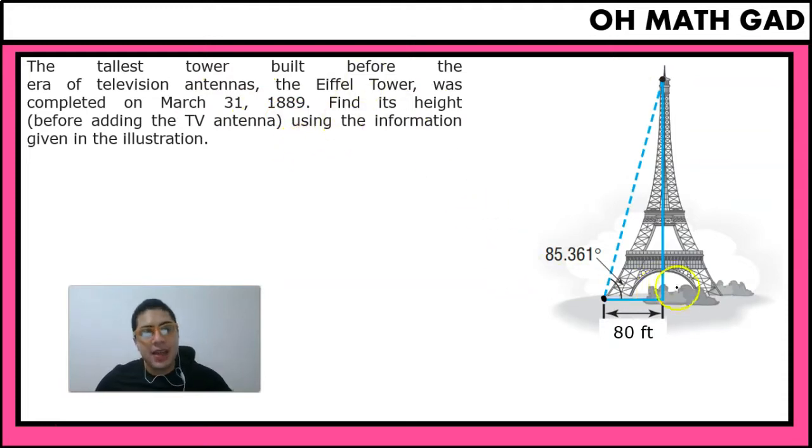Again guys, in this case we have a right triangle, so because of that we can use our trigonometric identities in order to solve this triangle. So we have a value of H, the height of the Eiffel Tower, and we have the value of 80 feet. We have our angle.